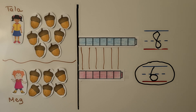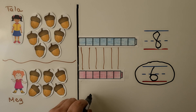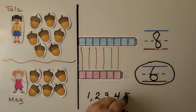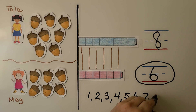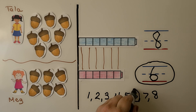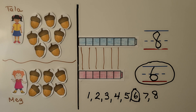The number that is fewer comes first in counting order. When we write the numbers one, two, three, four, five, six, seven, eight — here's six and here's eight. Six comes first. Six is fewer than eight.